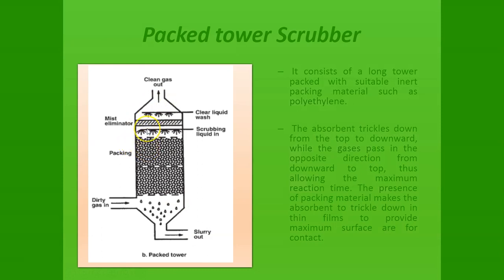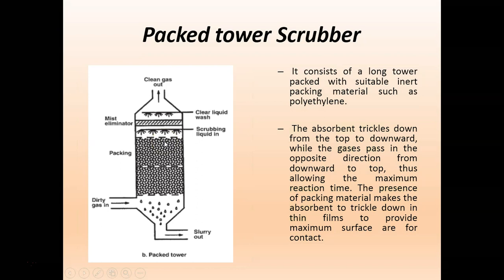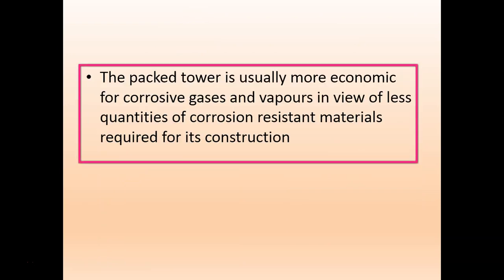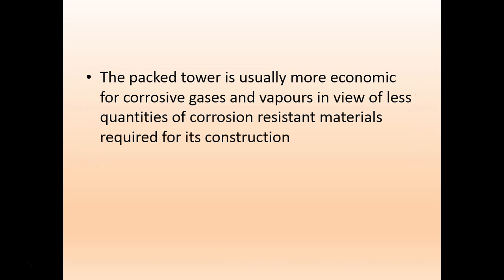After the fountain of water, there is a mist eliminator. The function of the mist eliminator is to remove the remaining moisture from the gas. The clean gas then comes out through the top. The packed tower is usually more economical for corrosive gases and vapors, as it requires less quantities of corrosion-resistant materials for its construction.